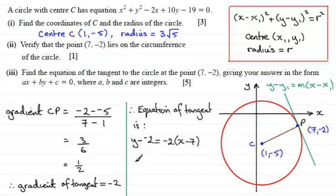So we'll just clean this up. We've got y plus 2 here, equals, and if we expand the bracket, we've got minus 2x, and minus 2 times minus 7 is plus 14.